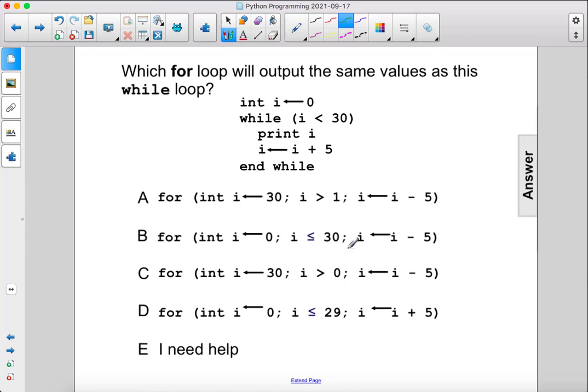Which for loop will output the same values as this while loop? i is 0, while i is less than 30, we're going to print i and then increment i by 5.